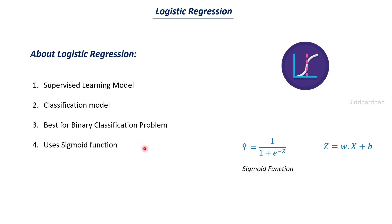The sigmoid function is given by: y-cap equals one divided by one plus e to the power minus z, and y-cap lies between zero and one. y-cap is the probability — specifically, the probability that y equals one. If you are unsure about what these things mean, please watch the previous videos, links are in the description. This is our sigmoid equation where we find y-cap, the probability of y being one.